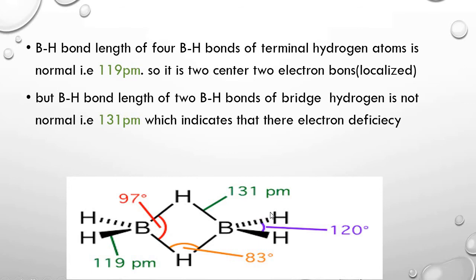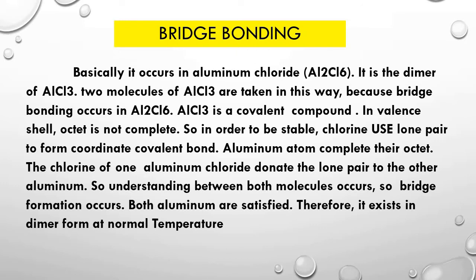These points justify that a banana bond exists in diborane. The second type of bonding in electron deficient compounds is bridge bonding, also known as a dative bond. It basically occurs in aluminum chloride, AlCl₃. AlCl₃ forms a dimer — it exists in the form of Al₂Cl₆.